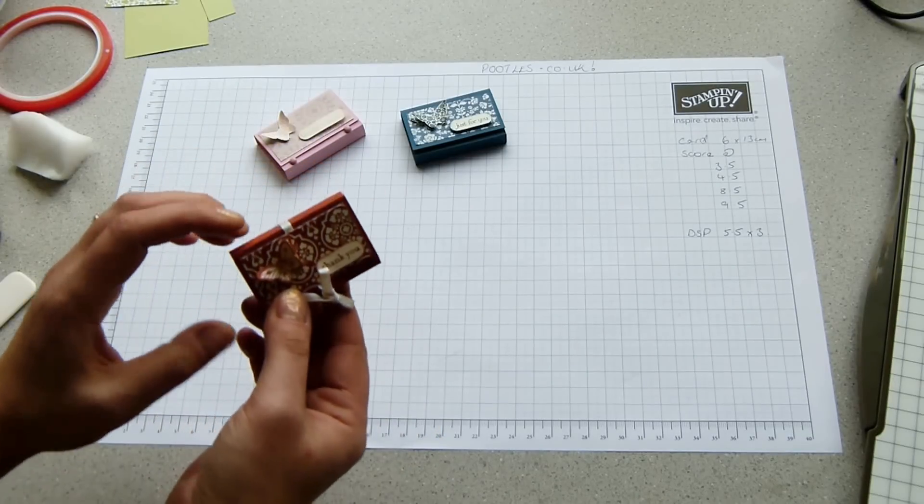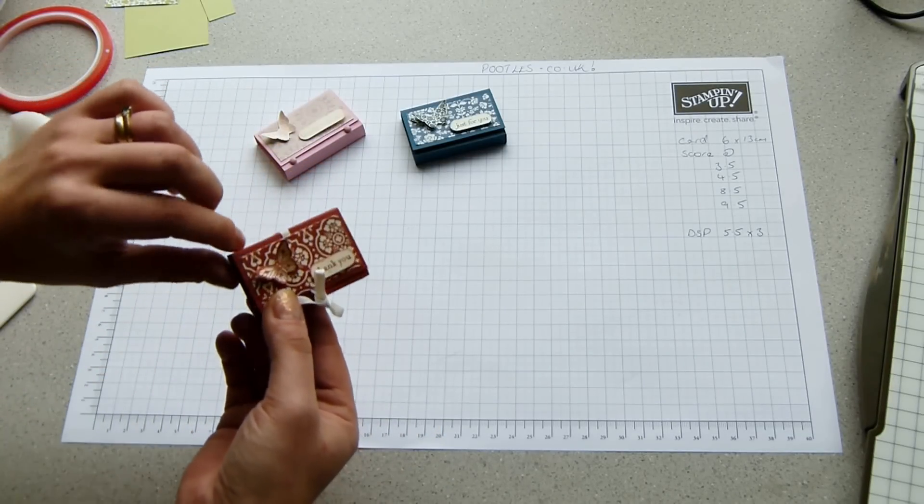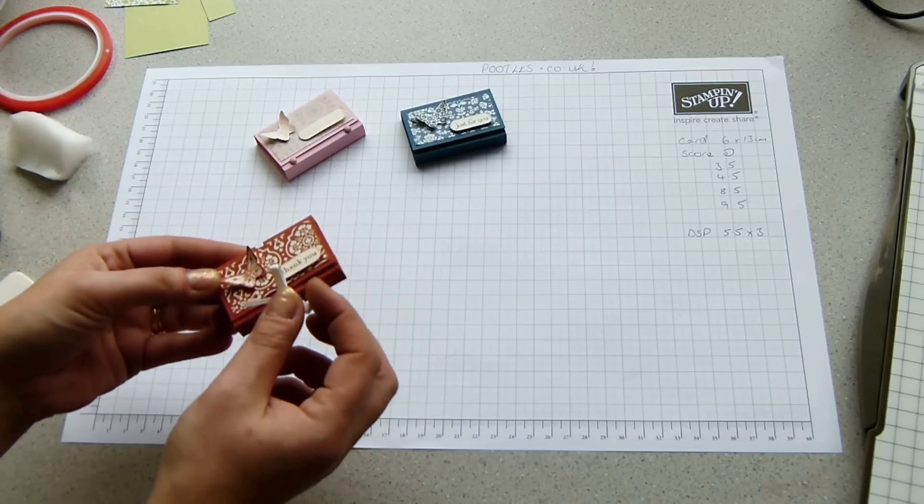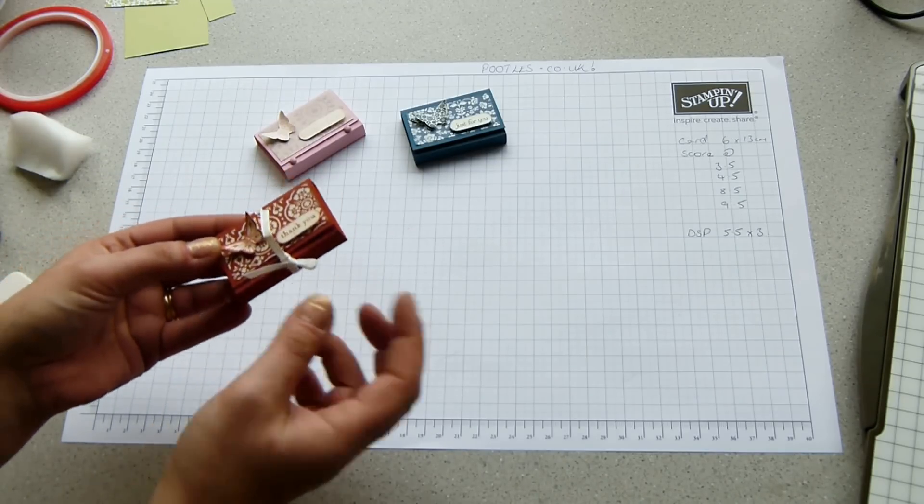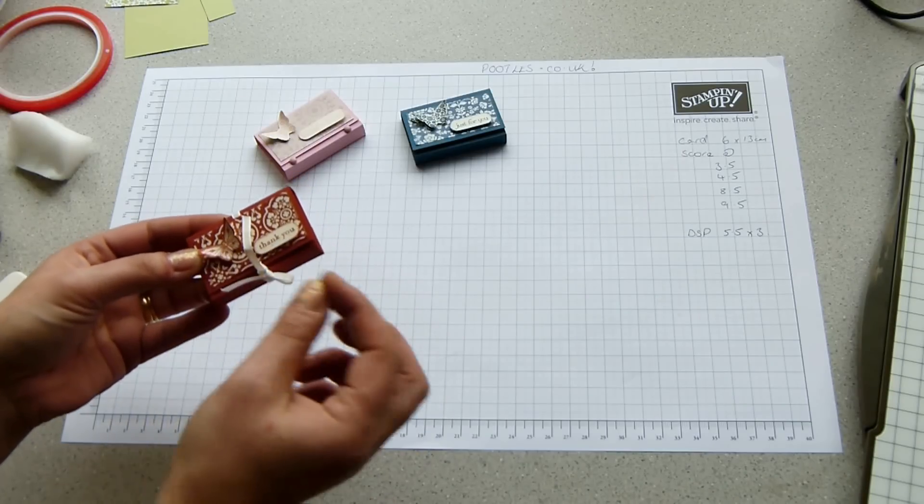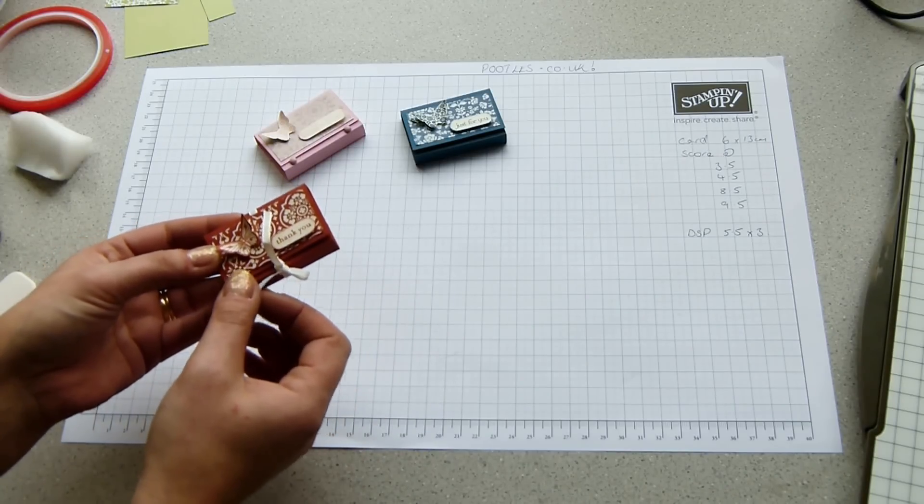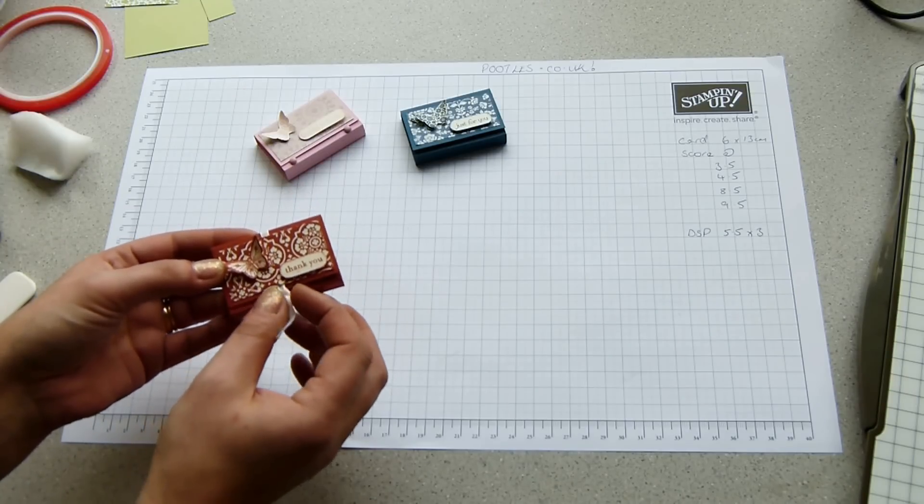This one here, I've closed it with ribbon. You feed the ribbon underneath the top Designer Series paper. My only grumble about this, though, is that actually once you've tied it in a bow and you've sent it off as a gift, you can't open it and close it particularly easily. But it looks very pretty.